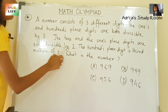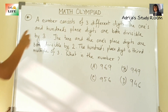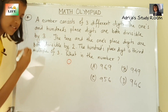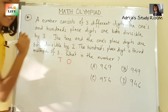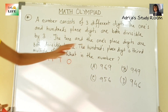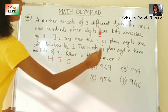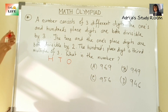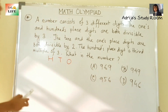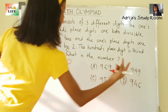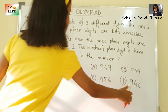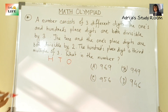The hundreds place digit is the third multiple of 3. What is the number? A number consists of three different digits — ones, tens, and hundreds. The ones and hundreds place digits are both divisible by 3. You can see 9 and 9 are both divisible by 3, then 9 and 6 are also divisible by 3.